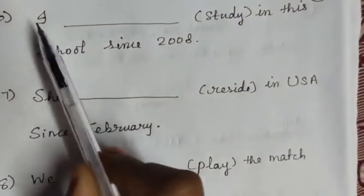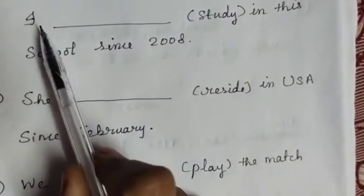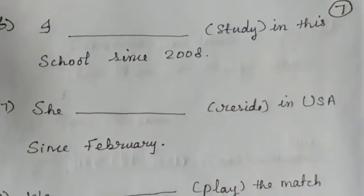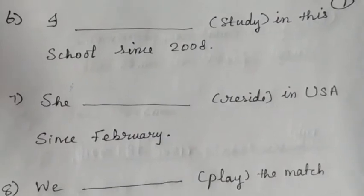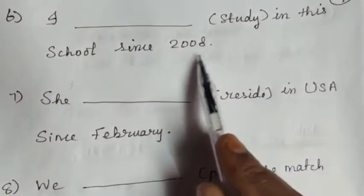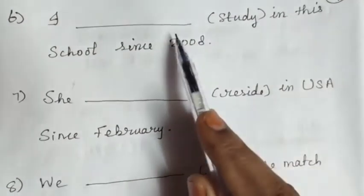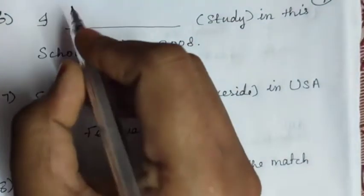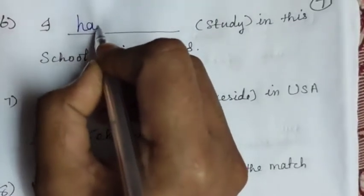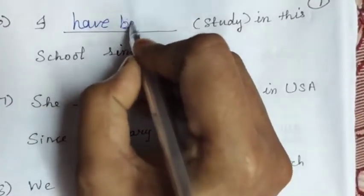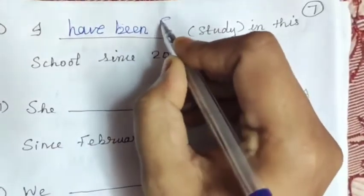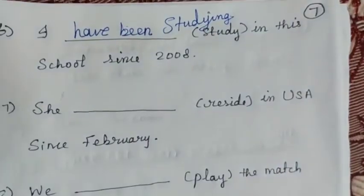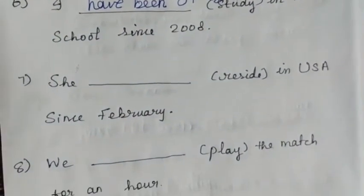Sixth question: 'I dash study in this school since 2008.' Since 2008 is a point of time, so we use present perfect continuous tense. 'I' takes 'have'. Answer: 'I have been studying in this school since 2008.'